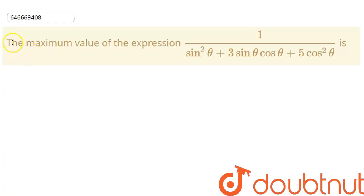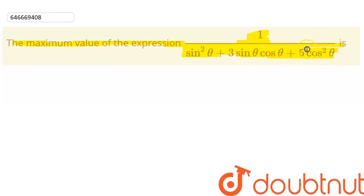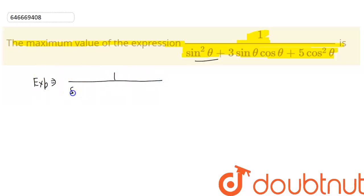Hello everyone. Today we are going to discuss one question on trigonometry. We need to find the maximum value of the given expression: 1 divided by (sin²θ + 3sinθcosθ + 5cos²θ).